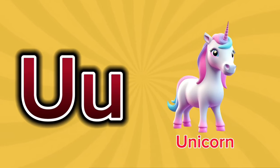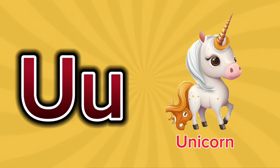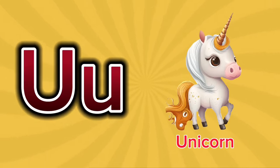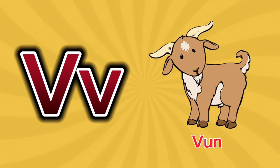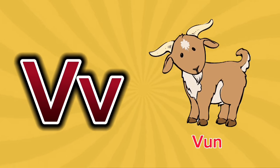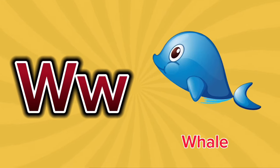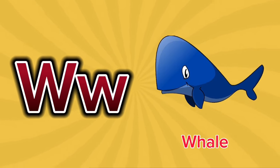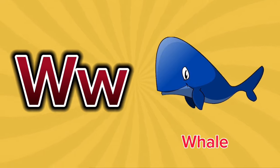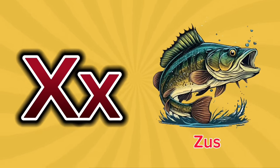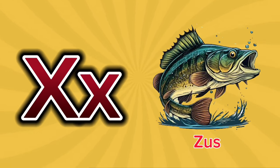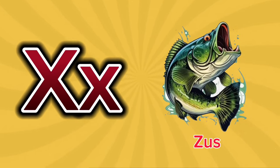U is for Unicorn. U-U-Unicorn. U is for Unicorn. U-U-U. V is for Vicuña. V-V-Vicuña. V is for Vicuña. V-V-V. W is for Whale. W-W-Whale. W is for Whale. W-W-W. X is for Xerus. X-X-Xerus. X is for Xerus. X-X-X.